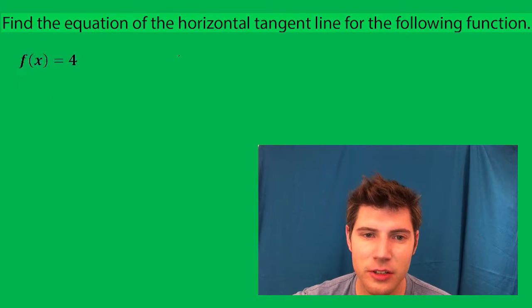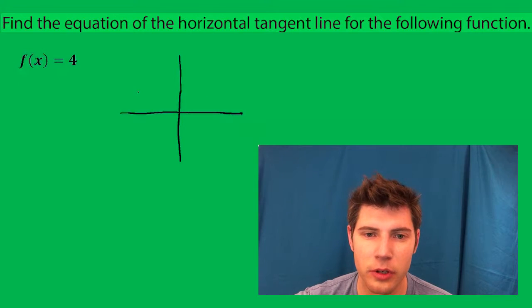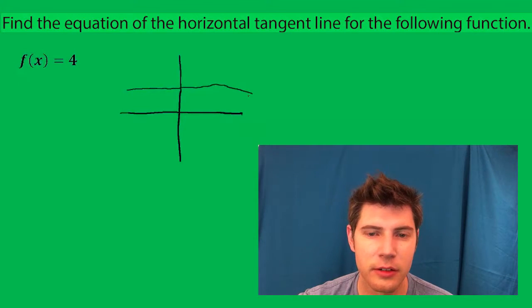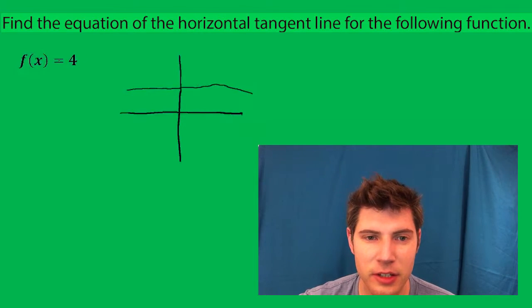So if we sketch this, it's y equals 4, so the line is this right here. So the horizontal tangent line, we know just by looking at this, is gonna be y equals 4.